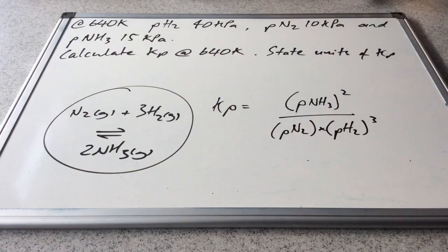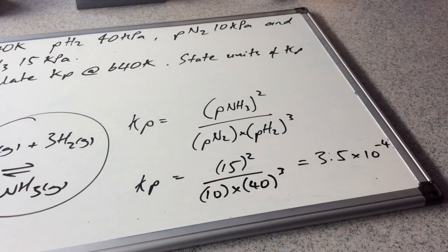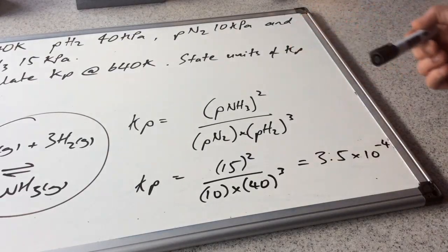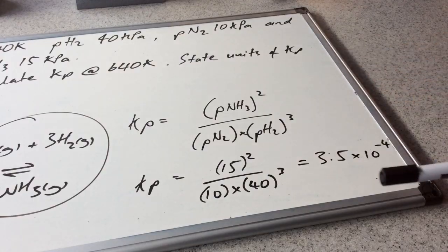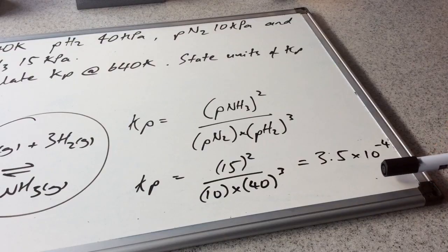Now we'll go straight into a calculation. At 640 Kelvin — notice we're specifying the temperature — the partial pressure of hydrogen is 40 kilopascals, the partial pressure of nitrogen is 10 kilopascals, and the partial pressure of ammonia is 15 kilopascals. Calculate Kp at this temperature and state its units. I've substituted the numbers into the expression we already had on the board, and I'm getting a numerical value for Kp of 3.5 × 10⁻⁴.